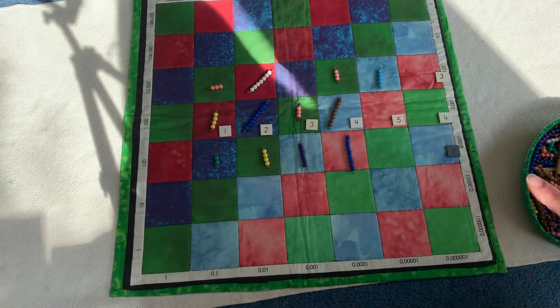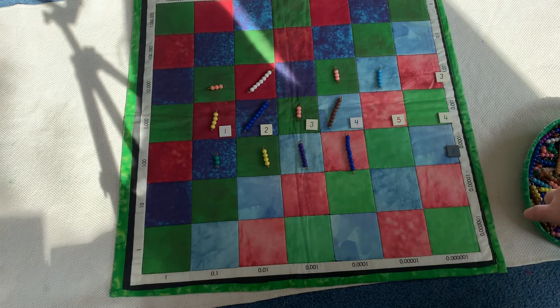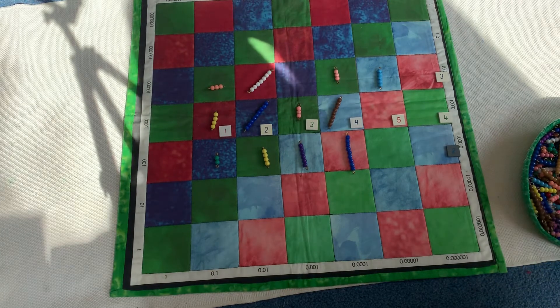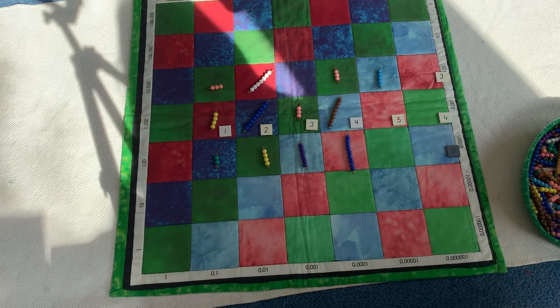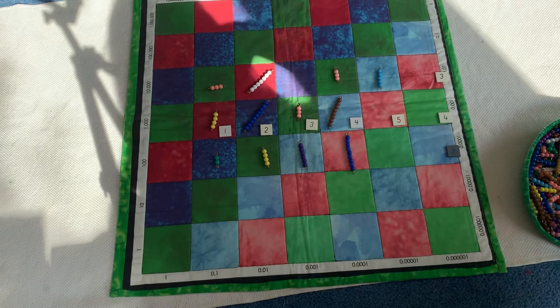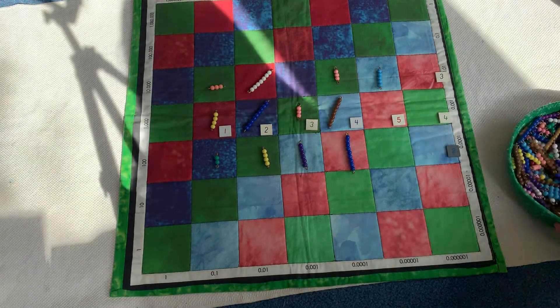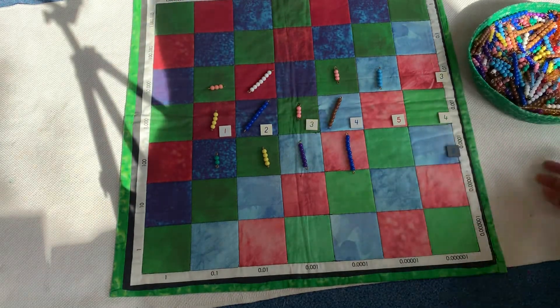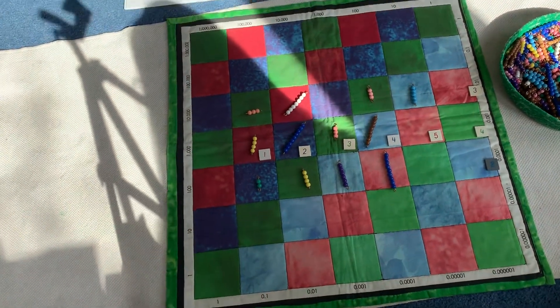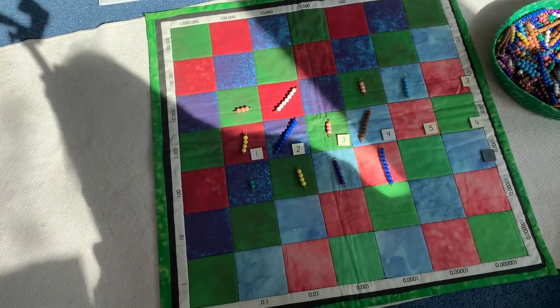Okay. So instead of laying out each bead, I did the calculations in my head and I laid out the beads and I exchanged as necessary. Okay. So that's one way to do it if you're fast with your multiples.